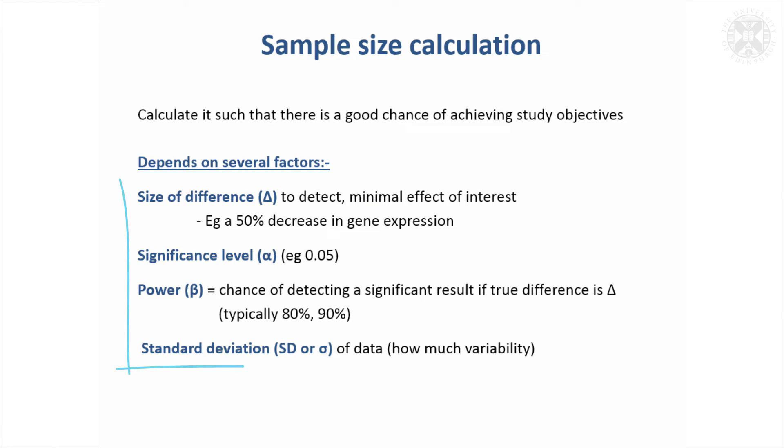So they're the four ingredients that go into sample size calculation. The first one you just need to think about, the significance level is usually obvious. The power you just need to decide - how certain you want to be about getting your significant result. And then you do need an estimate of the standard deviation of your primary endpoint.